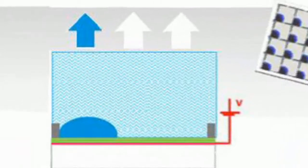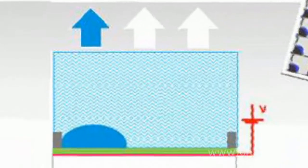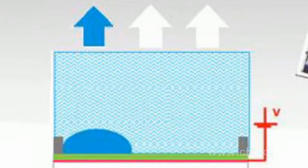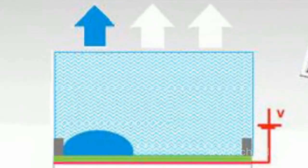On the contrary, if the voltage is present, the oil film rolls up into a drop, which corresponds to the mode on and is perceived as a light pixel.